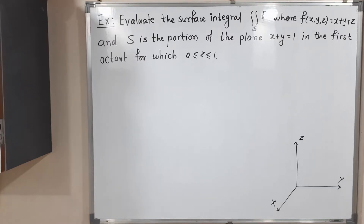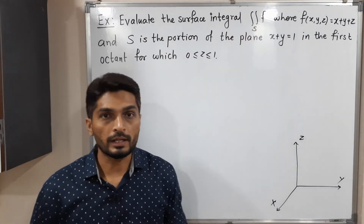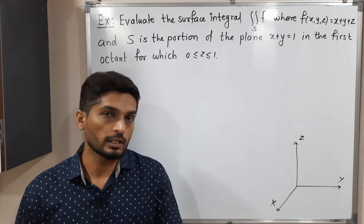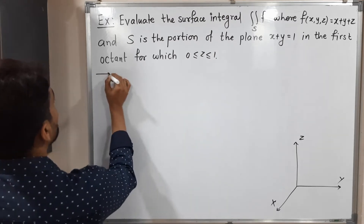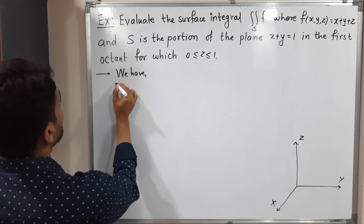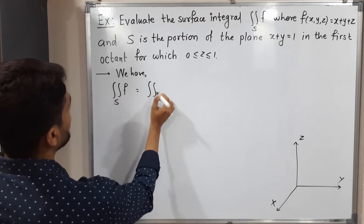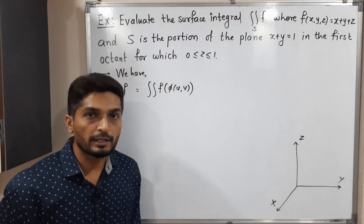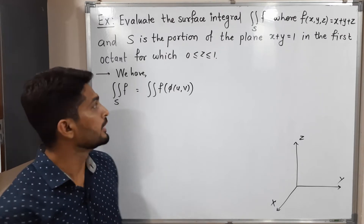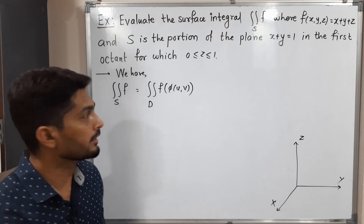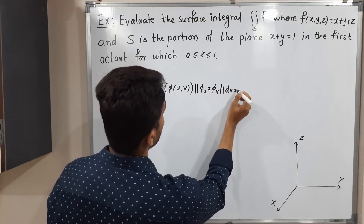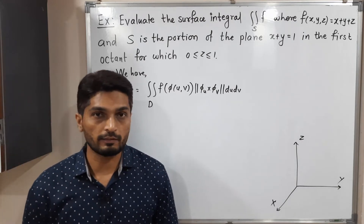Let us discuss this example. We have to find the value of the surface integral — double integration of f over s — where f is a scalar field and s is a given surface. We are familiar with the definition of surface integral of scalar fields. We have: double integration of f over s equals double integration of f of φ(u,v), where φ is a parameterization of surface s defined on domain d, followed by the norm of φ_u cross φ_v, du dv.